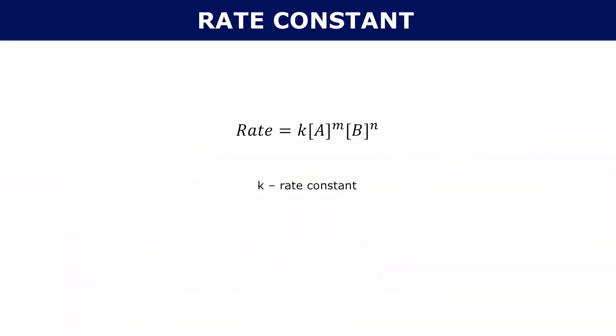So remember, your rate law tells you that the rate is equal to k times the concentration of A to some power m, where m is the order of A, times the concentration of B to some power n, where n is the order of B, and k is your rate constant.